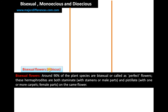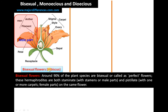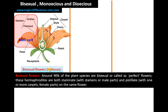Take the hibiscus flower as an example. In a bisexual flower, the male and the female reproductive structures can be seen in the same flower — that is why it is called bisexual, having two sexes in the same flower. The male part comprising the anther and filament is called a stamen.